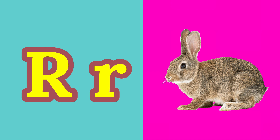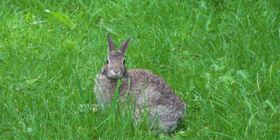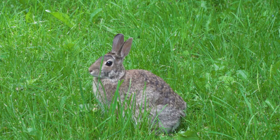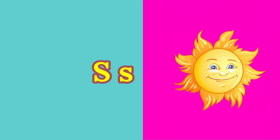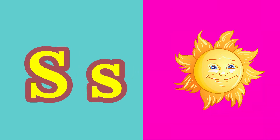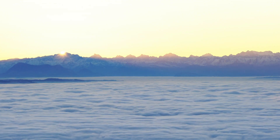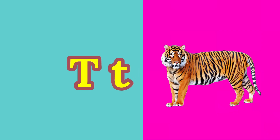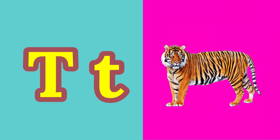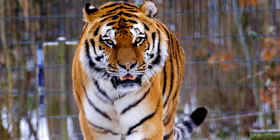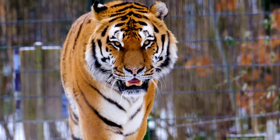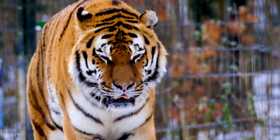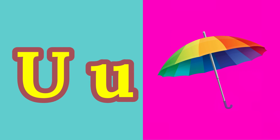R for Rabbit, S for Sun, T for Tiger, U for Umbrella.